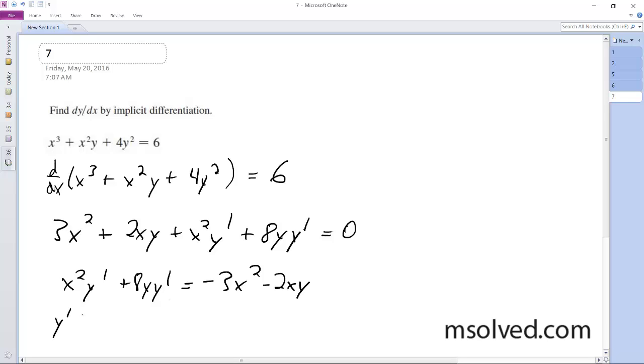Factor out y prime, so we get x squared plus 8 y equals negative 3 x squared minus 2 x y.